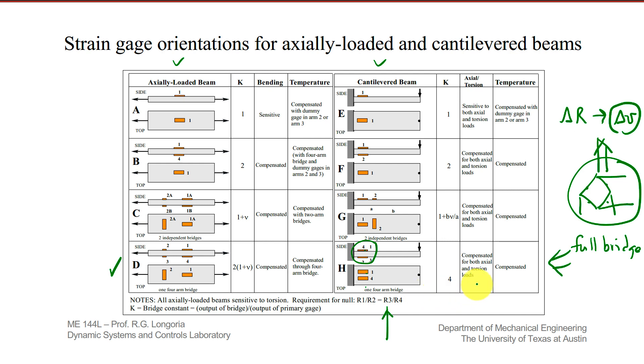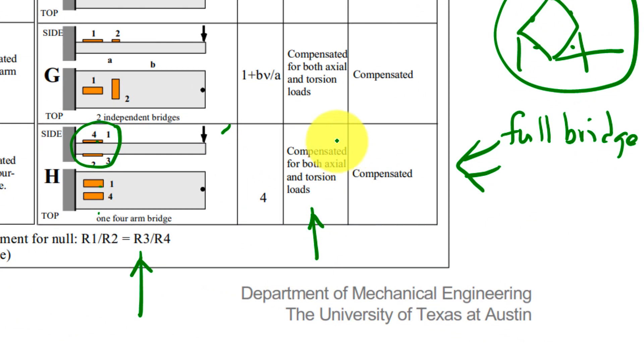Look at also this kind of configuration, a cantilevered beam, tip-loaded. It has compensation for both axial and torsion load. So if I twist this beam or I apply an axial load, the resistive strain gauge, rather, the total bridge output won't change. So it's kind of neat. So you can twist that beam, you can axially load it, and it's only going to be sensitive to bending stress.